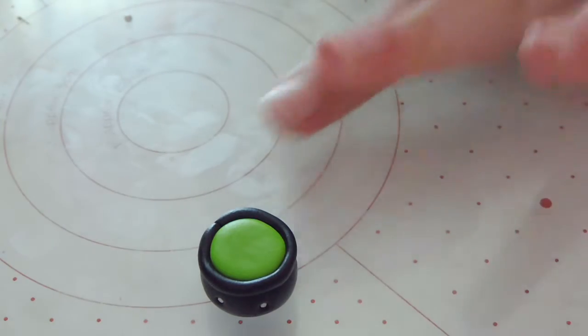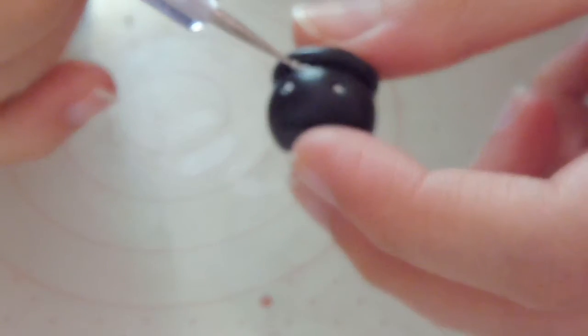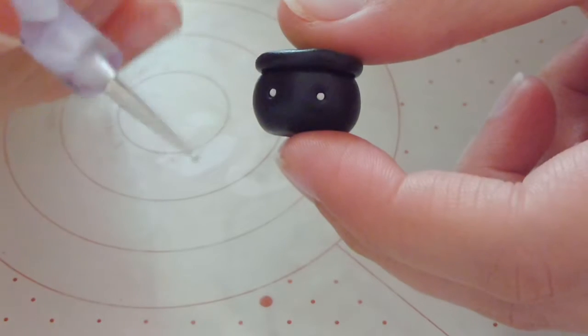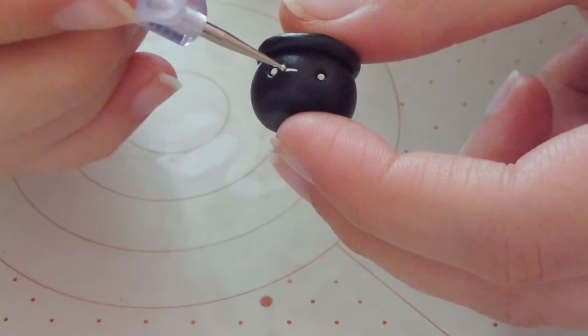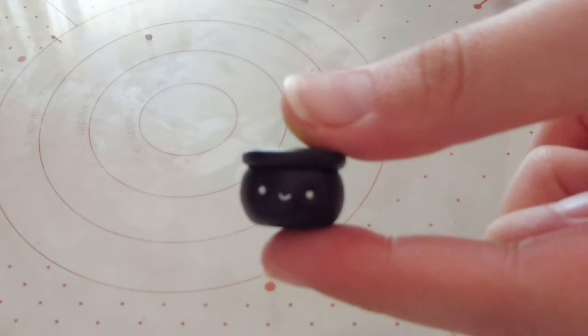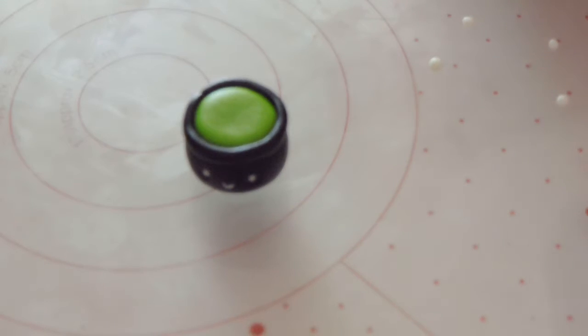Once you're done with the eyes, you're gonna want to roll out a thin little snake to create the smile. I'm just gonna cut a very small piece of white clay and place it between the eyes, maybe a little bit lower than the exact center. There we have our little face. Once the base is done, it's time for the bubbles.